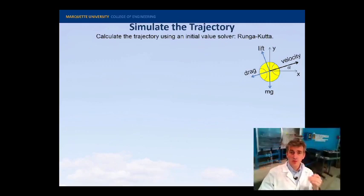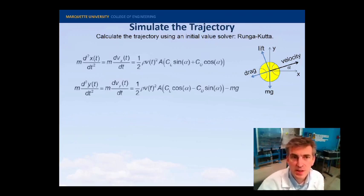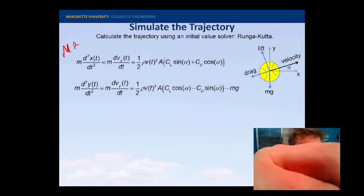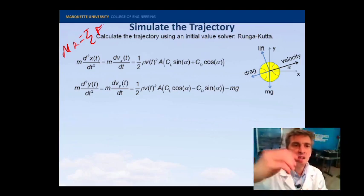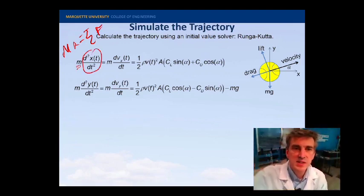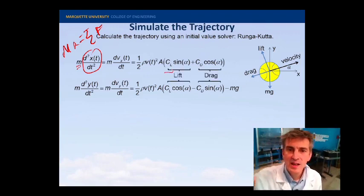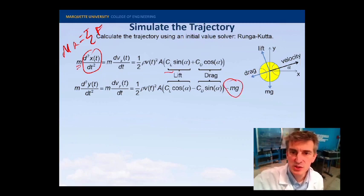From this data, from these initial conditions, we can calculate the trajectory that the ball has traveled. This is a simple MA equals the sum of forces kind of calculation. Everybody's favorite. And this is the acceleration here. And this is the mass of the tennis ball. And in the x direction, I have two forces, the lift and the drag. And in the y, I've got an additional gravitational term.